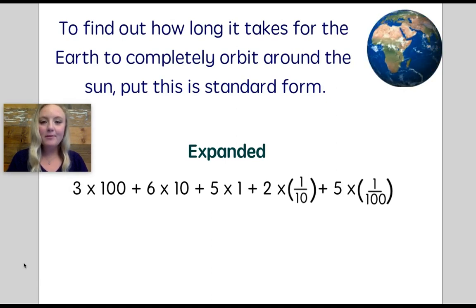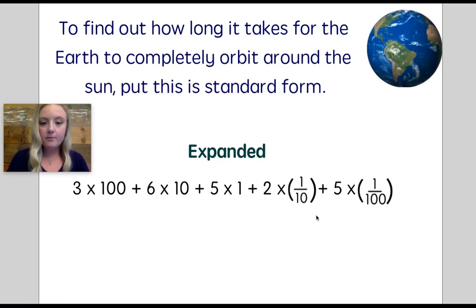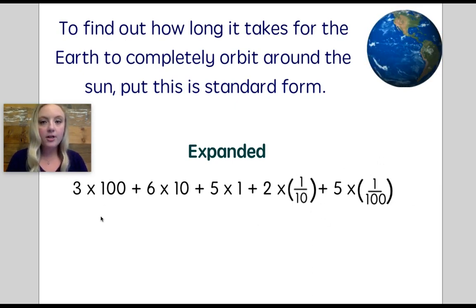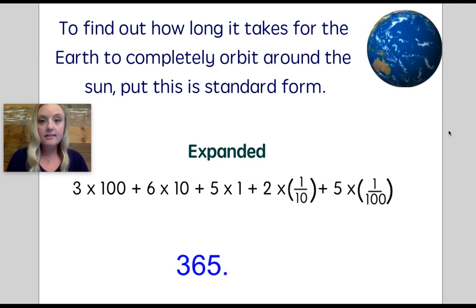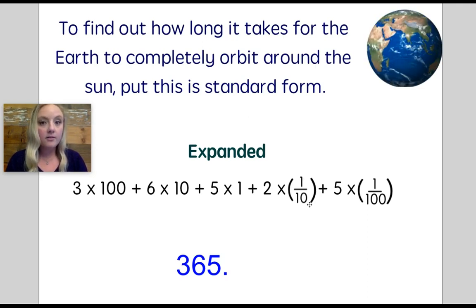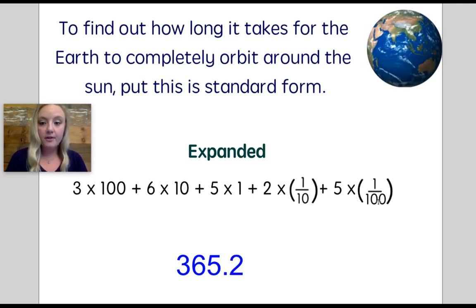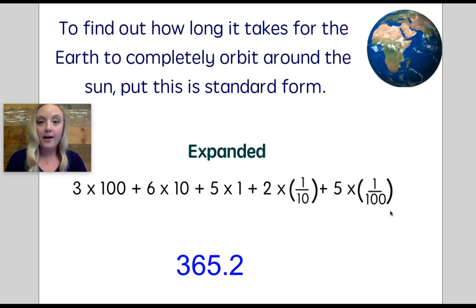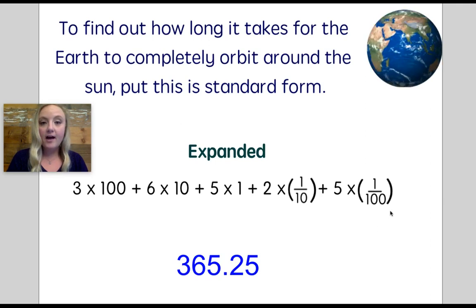To find out how long it takes for the Earth to completely orbit around the Sun, put this in standard form. Here we have three groups of numbers before we get into the fractions or decimals. Three times one hundred is three hundred, six times ten is sixty, five times one is five — so for our whole number, we have three hundred sixty-five. Next, I have two times one tenth — that means I'm putting a two in my tenths place. Next, we have five times one hundredth, which means I have five hundredths, so I'm putting a five in the hundredths place. It takes three hundred sixty-five and twenty-five hundredths days for the Earth to orbit the Sun.